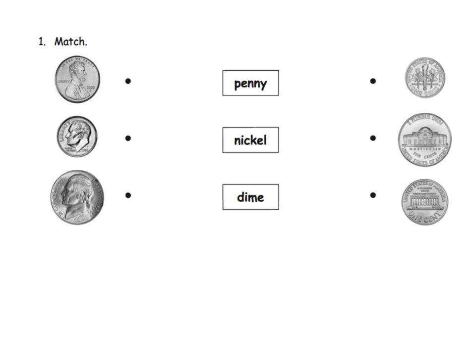But this lesson really begins largely with just simple identification. So the idea would be, what is this? Oh, this is a penny. So here's our penny and we're going to draw a line. And which one of these over here is also a penny? Which one of these? And of course we want our students to recognize this one is a penny.